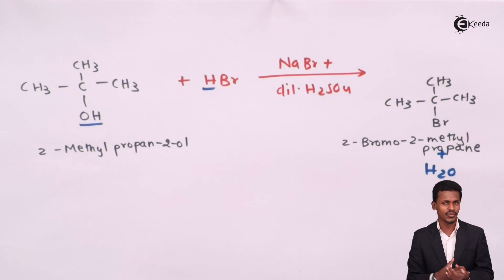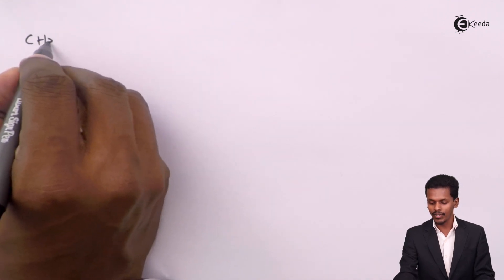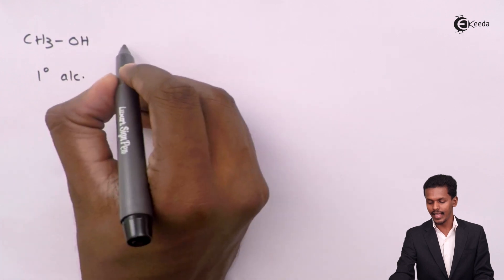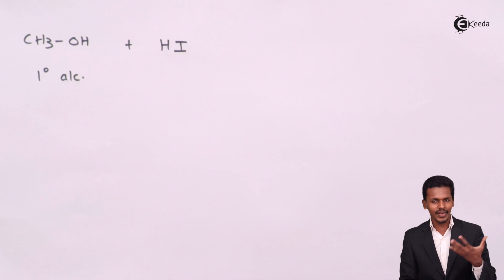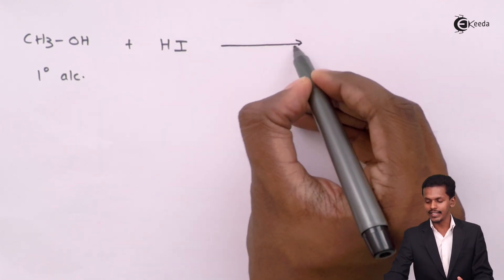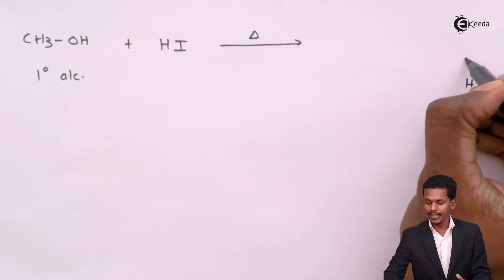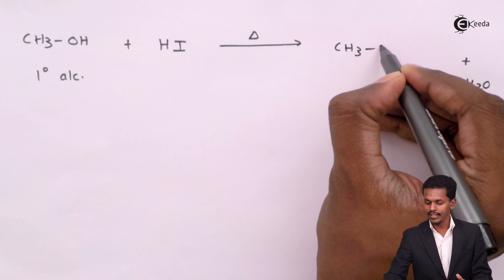Now we discuss what happens when alcohol is treated with HI or hydrogen iodide. If we use a primary alcohol like methanol and react it with HI, we simply heat it — the OH and H are removed as H₂O — and we obtain CH₃I, also called iodomethane. This reaction can take place using a 57% HI solution.